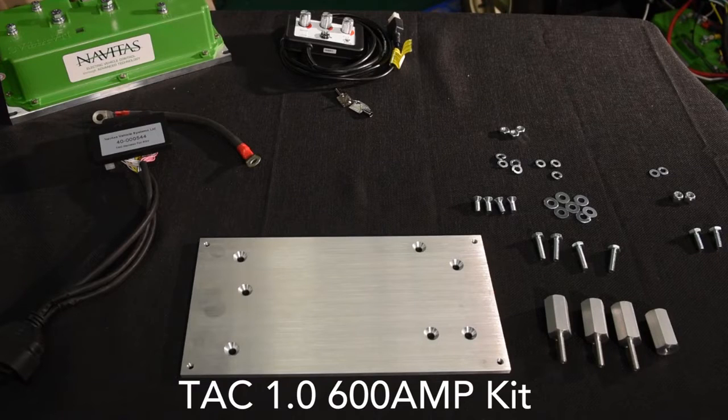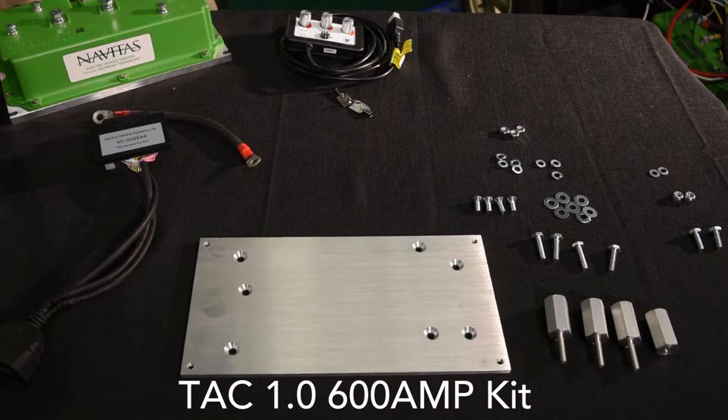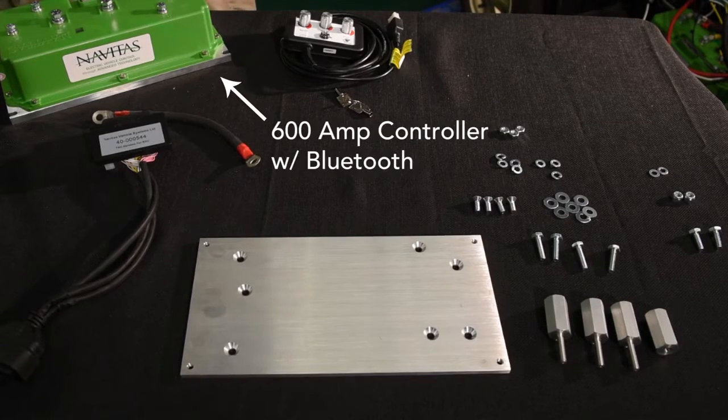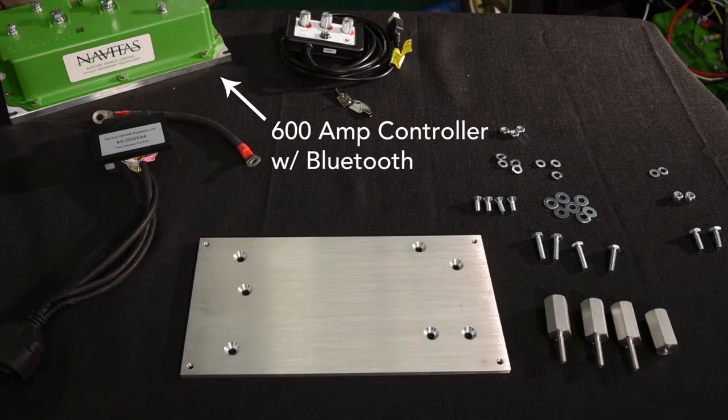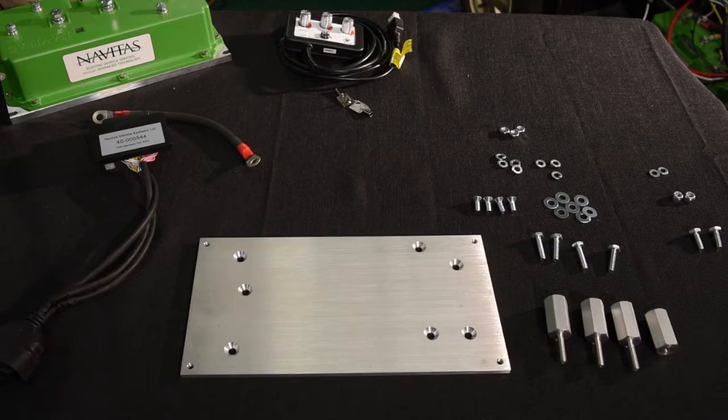When you purchase the TIC 1.0 600A kit you will receive these items: a 600A AC controller with Bluetooth that can work with 36 to 72V drive systems.